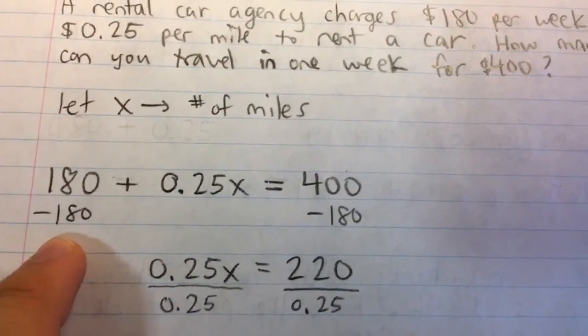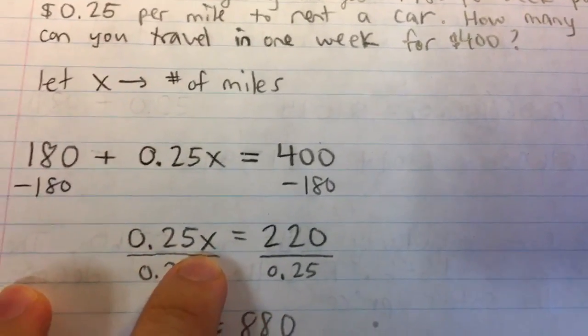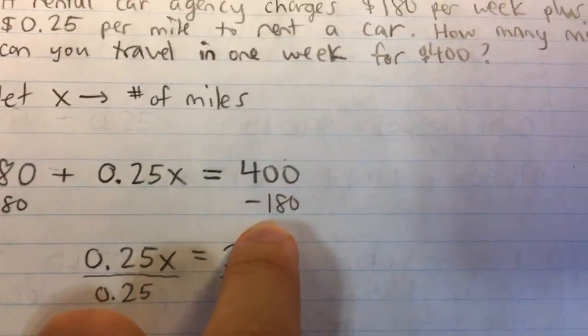So to solve this equation, I'm going to subtract 180 from both sides, because I'm trying to isolate X. Then I'll get 0.25X on the left, because this will cancel out. On the right, I'll have 400 minus 180, which is 220.